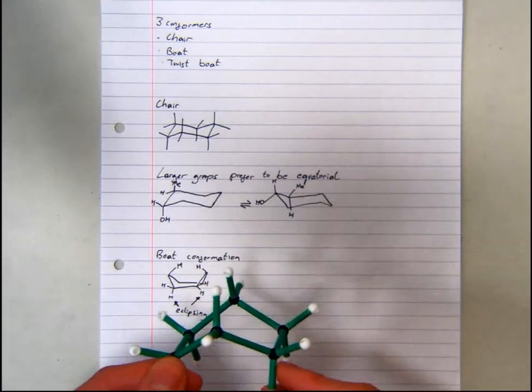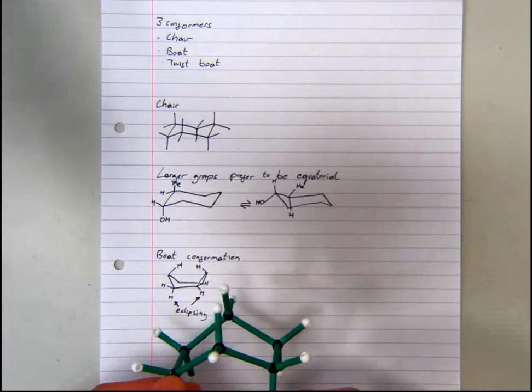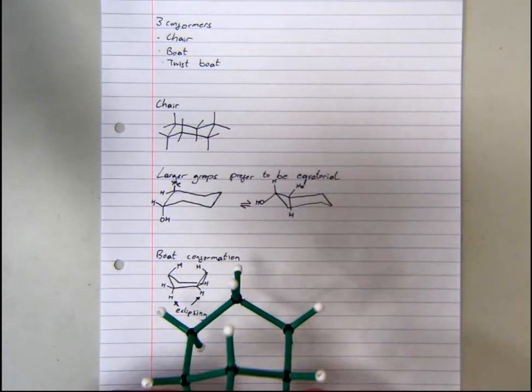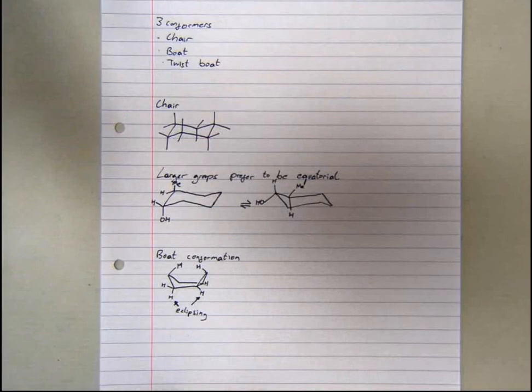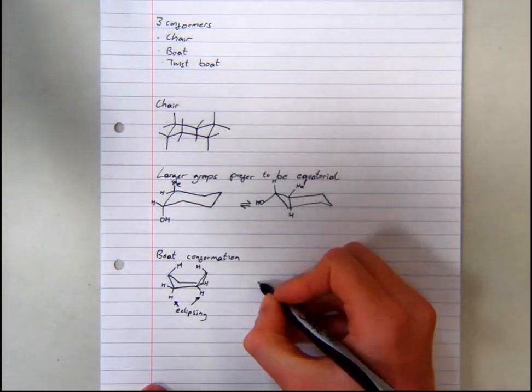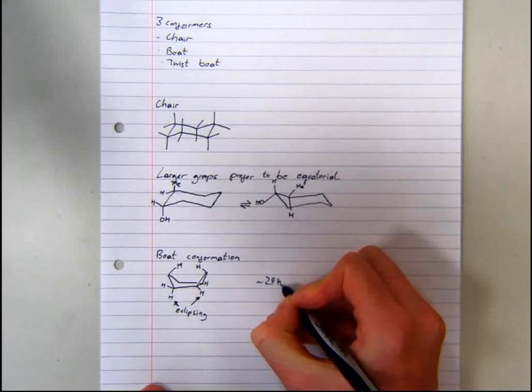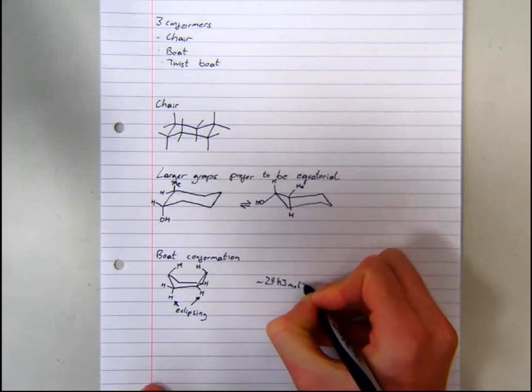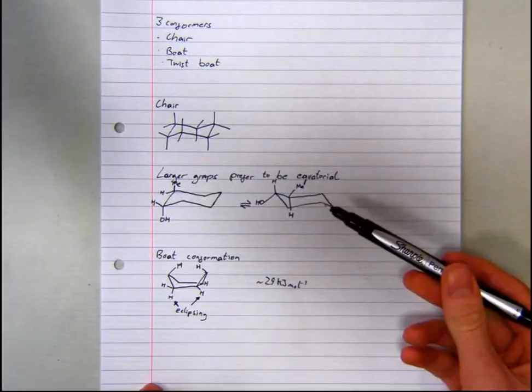This also shows the eclipsing of the side hydrogens. These interactions cause the boat to be approximately 29 kJ per mole higher in energy than the chair.